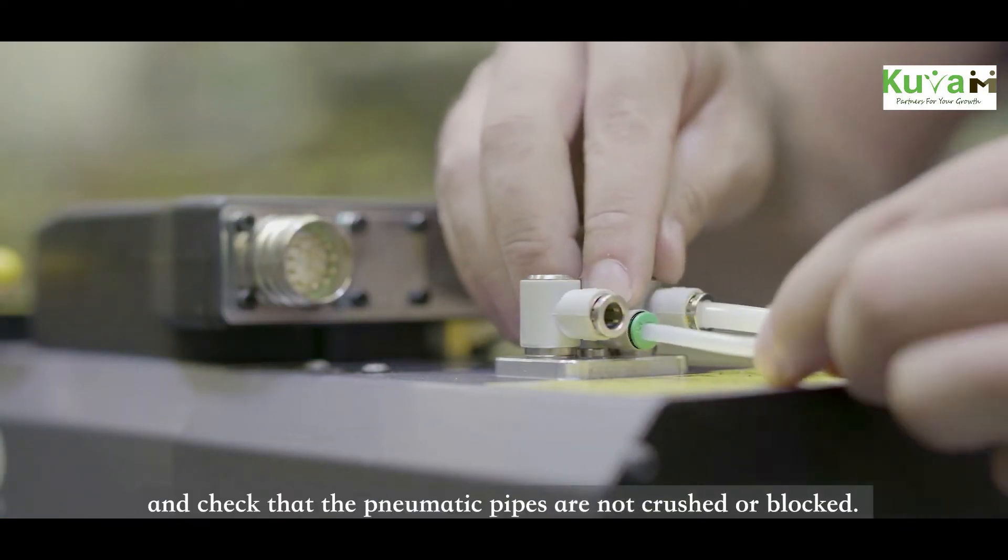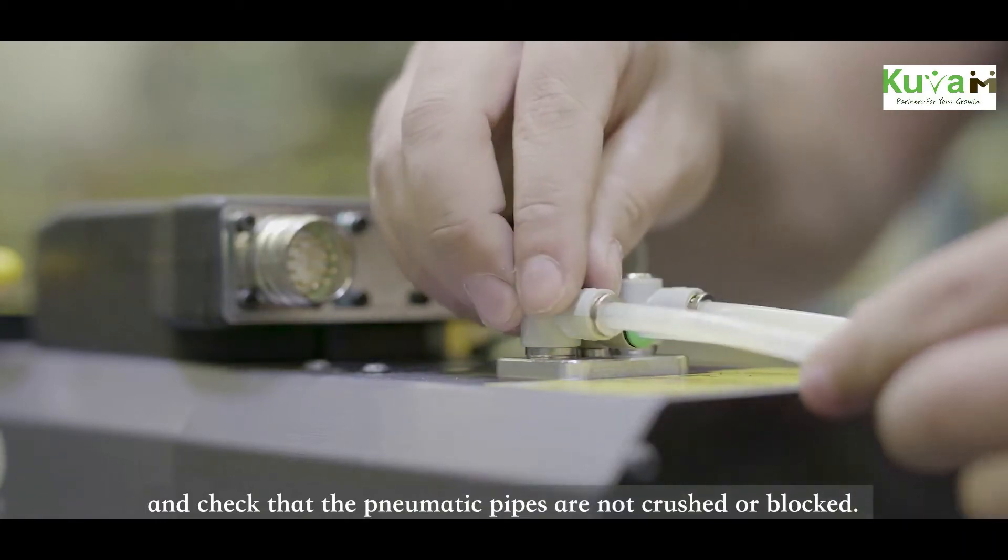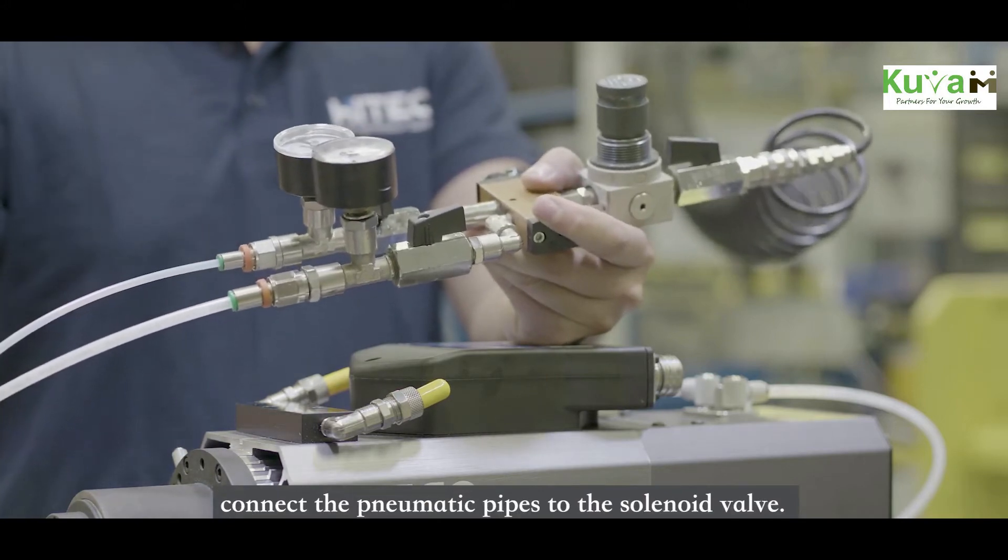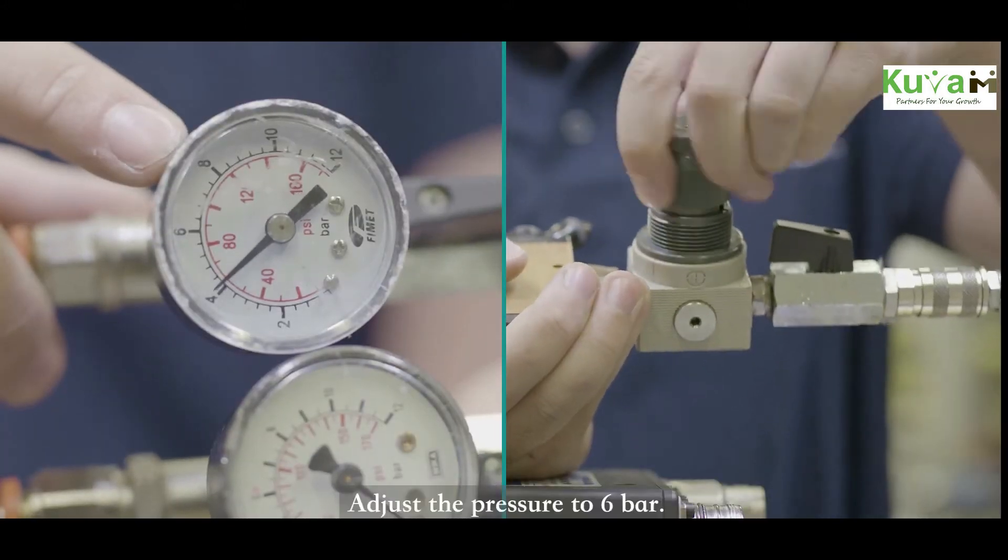Check the pneumatic pipes are not crushed or blocked to operate the lock and release cylinder. Connect the pneumatic pipes to the solenoid valve and adjust the pressure to 6 bar.